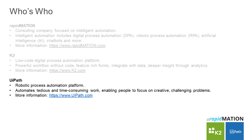UiPath is a robotic process automation platform which is essentially computer software that can automate repetitive rules-based tasks typically performed by humans on their computer, utilizing the user interface to manipulate data and applications just as a human would. This allows people to automate tedious and time-consuming work, enabling them to focus on creative, challenging problems.